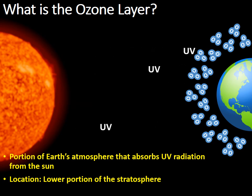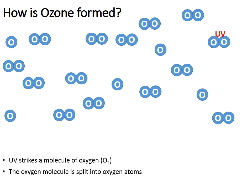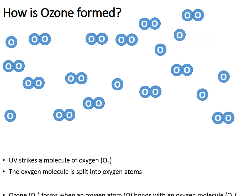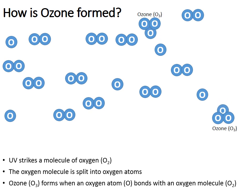So how is ozone formed? It all starts when an incoming photon of UV light strikes a molecule of oxygen — O2, the oxygen that we breathe. The UV light will cause this oxygen molecule to split into individual oxygen atoms. Ozone, which is O3, forms when one of those oxygen atoms bonds with another O2 in the atmosphere — 1 plus 2 equals 3.